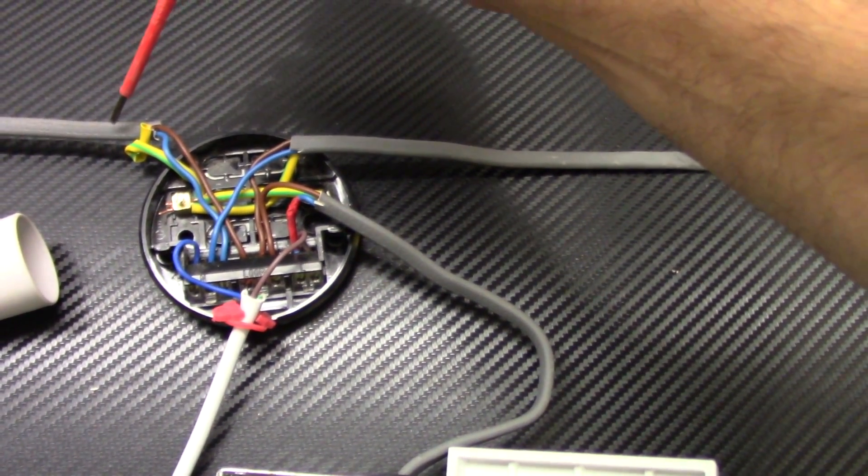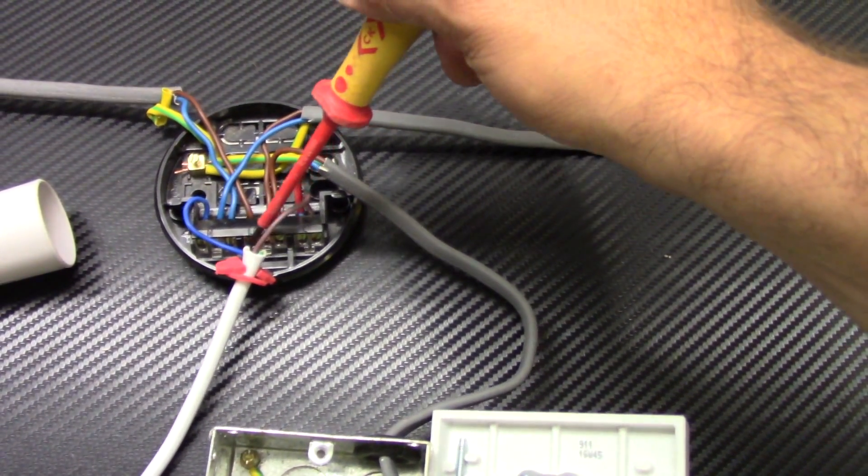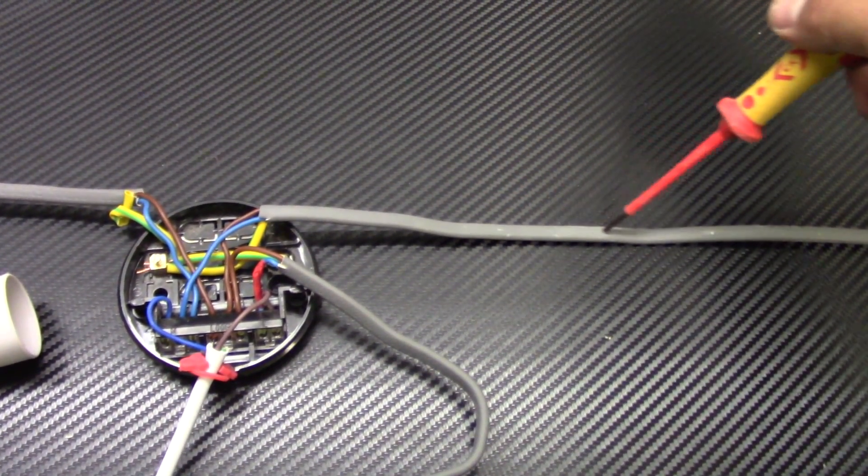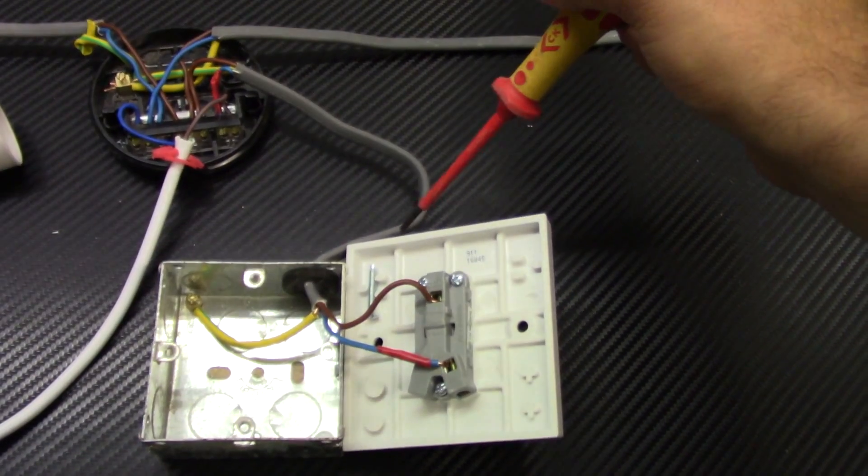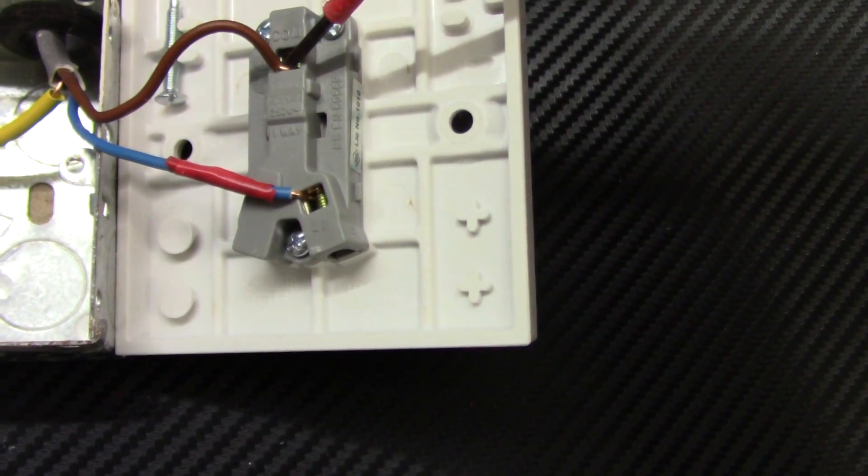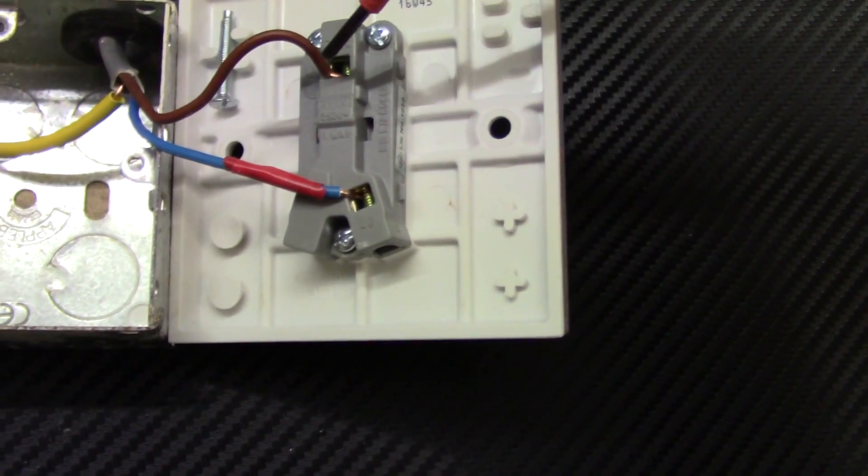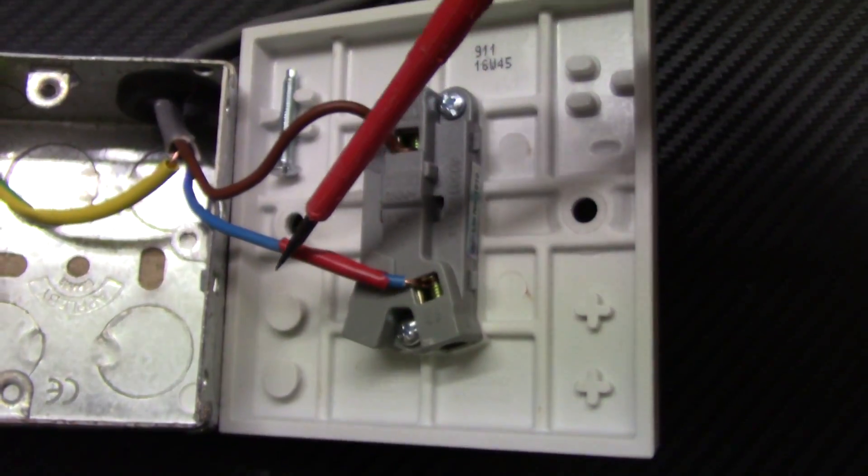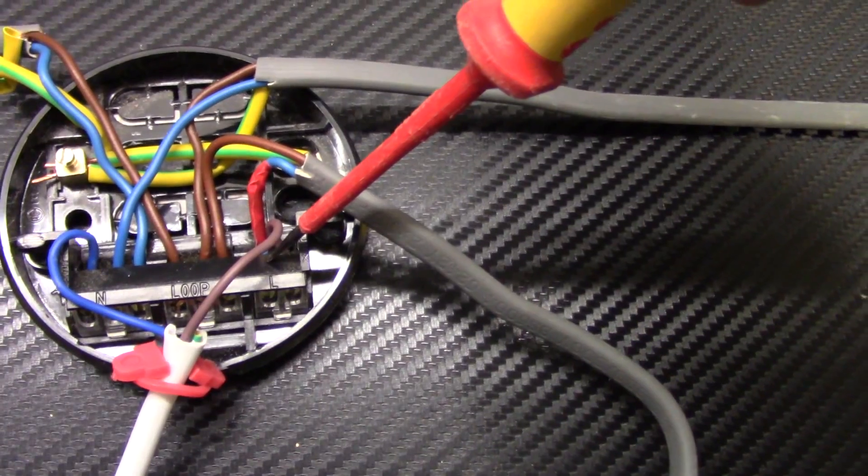The line or live conductor, it goes from the previous light into this ceiling rose into the loop. In the loop it splits and goes to another light fitting in another room, and also splits and goes to the one-way switch. It's connected to the common terminal. You've only two terminals in a one-way switch: common and L1.